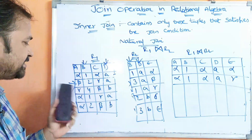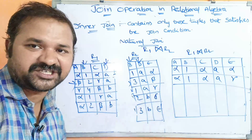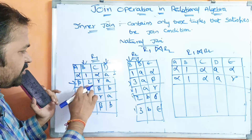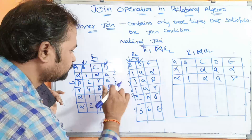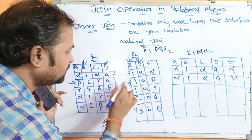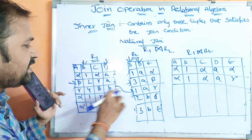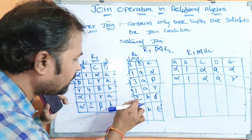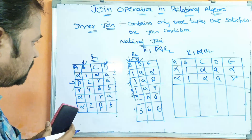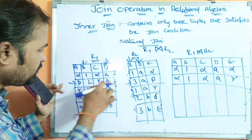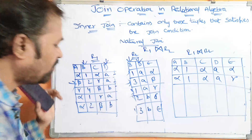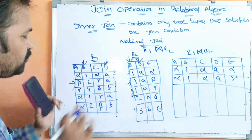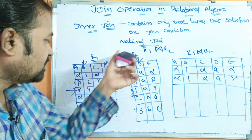Next, the second row of the first relation will be compared with all the rows of the second relation. The BD value is 2A. So 2A compared with 1A — not equal. 2A compared with 3A — not equal. 2A compared with 1A — not equal. 2A compared with 2B — not equal. 2A compared with 3B — not equal. So second row produces no matches.